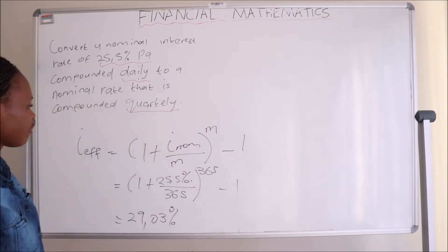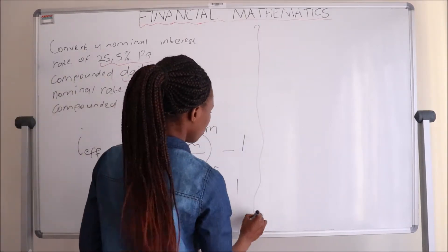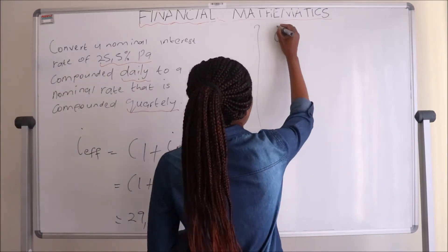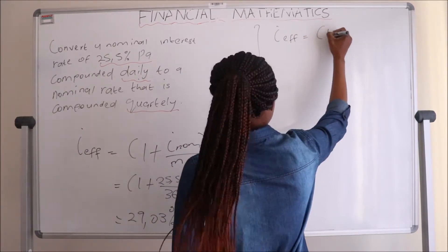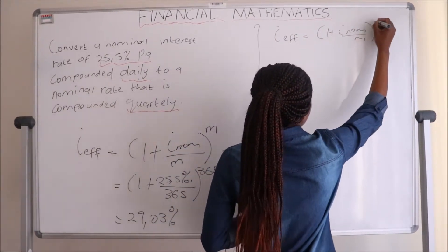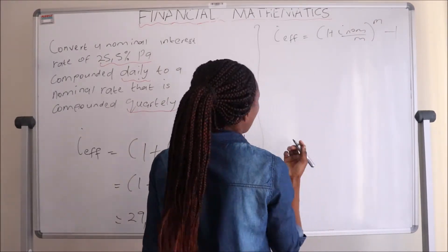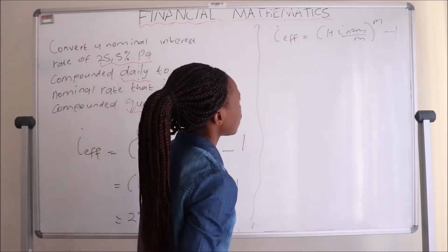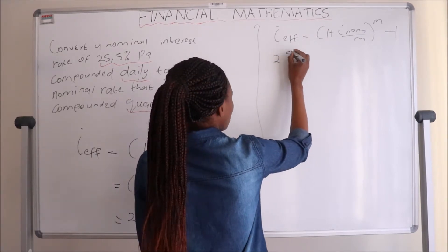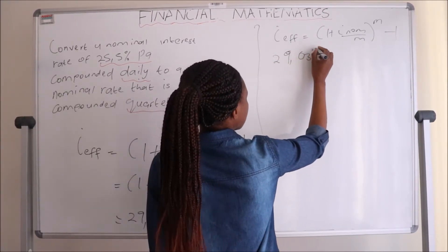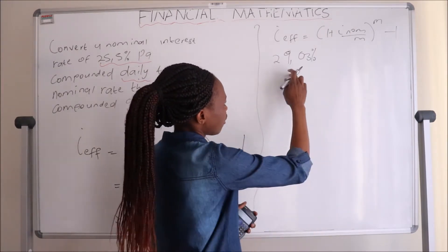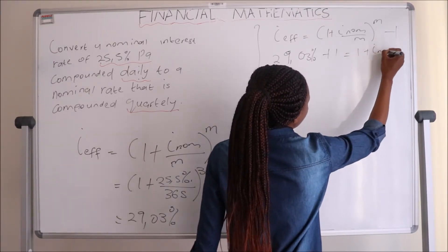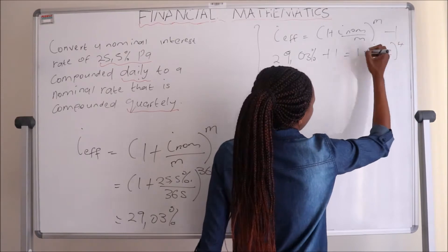This is the effective interest rate. Now to convert that to a nominal interest rate compounded quarterly, we use: I_effective = (1 + I_nominal / M)^M − 1. With I_effective = 29.03%, we move the 1 to the other side: 1.2903 = (1 + I_nominal / 4)^4, since quarterly means M = 4.